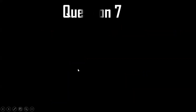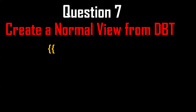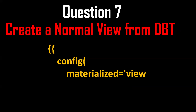One more question: how to create a normal view from dbt? This is also done using the config macro with 'materialized = view'. If I set materialized to view, a normal view will be created.